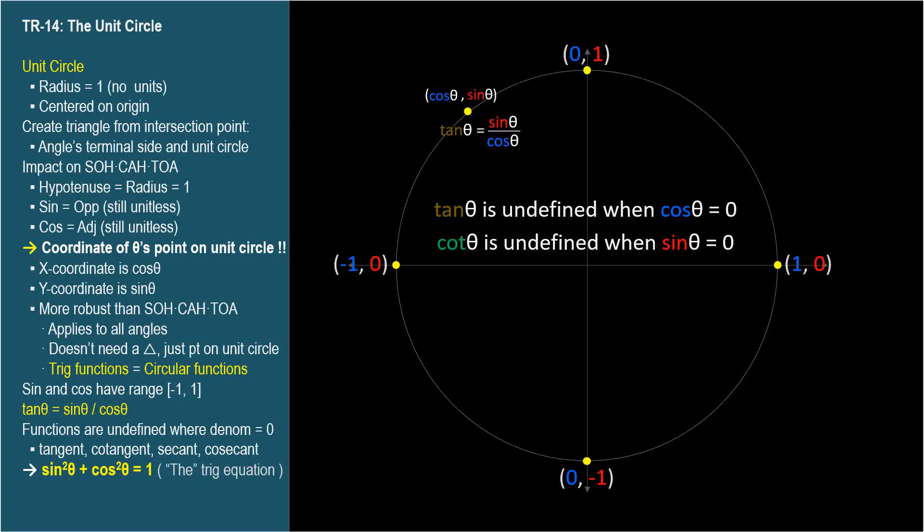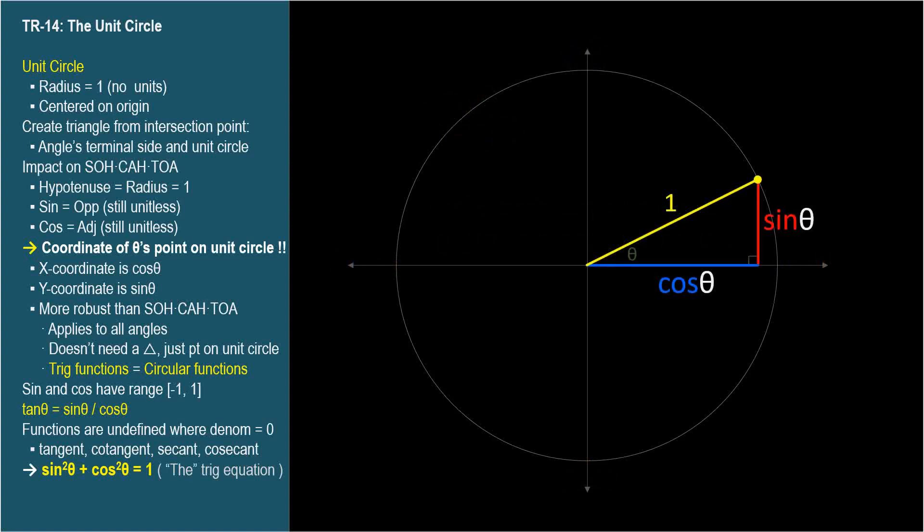The unit circle model gives us an opportunity to see the most fundamental identity in trigonometry. An identity is an equation that's always true. We'll talk about trig identities later in video TR-32. But since the most important one is right here in front of us, we may as well dive in. We just apply the Pythagorean theorem to this triangle.